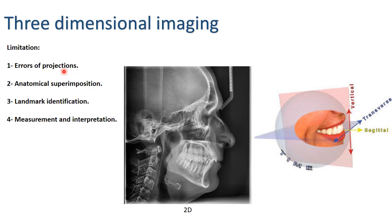The three-dimensional imaging modalities are the most contemporary views. When taking a cephalometric radiograph, it shows only two dimensions: the vertical and the anteroposterior. Normally we have three dimensions — vertical, sagittal or anteroposterior, and transverse. Two-dimensional radiographs have many limitations, including errors of projection, anatomical superimposition, and difficulty in landmark identification and measurement.